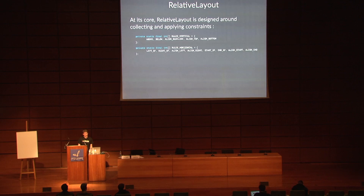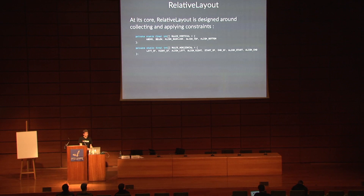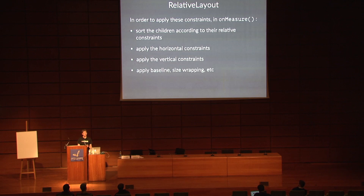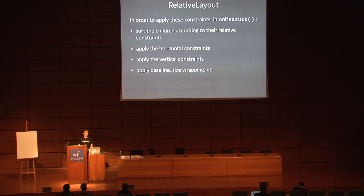If we look at RelativeLayout, at its core it is designed around collecting and applying constraints. It collects rules for vertical placement — above, below, align baseline, align top, and so on — and for horizontal placement as well: left of, right of, start, and so on. In its onMeasure call, it sorts all of its children according to their relative constraints, then applies horizontal constraints, vertical constraints, and then everything that is left — baseline, size wrapping, right-to-left, and so on. In order to do so, RelativeLayout needs two passes in onMeasure: first to collect, then to apply. That's why it's going to be costly.